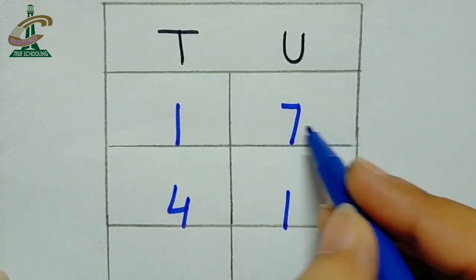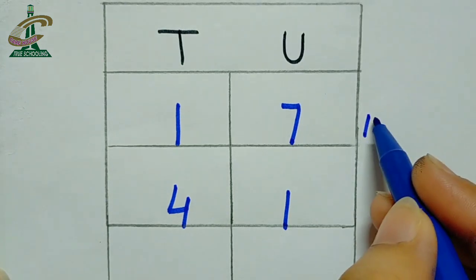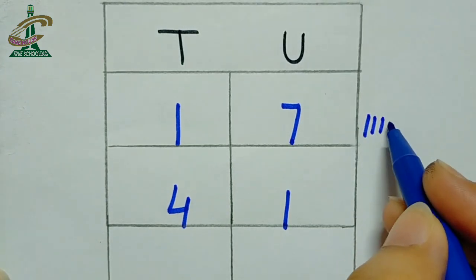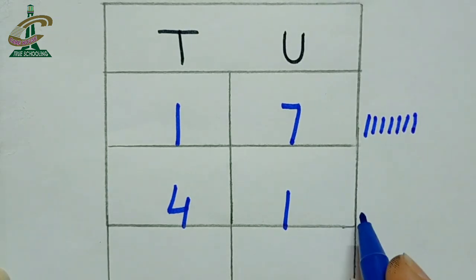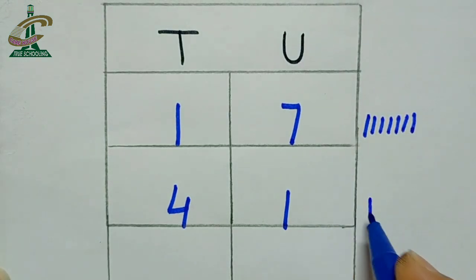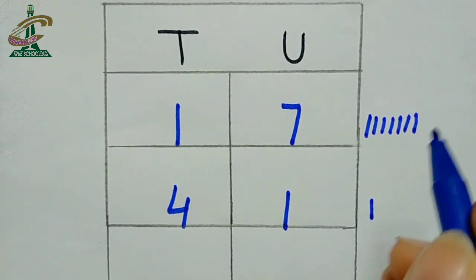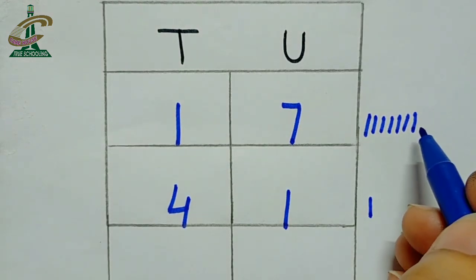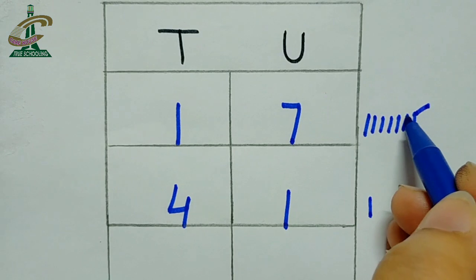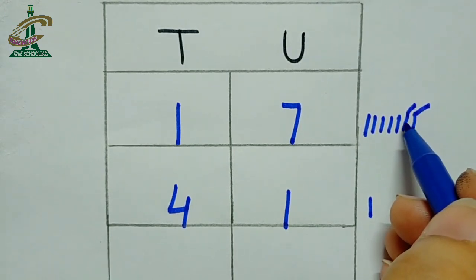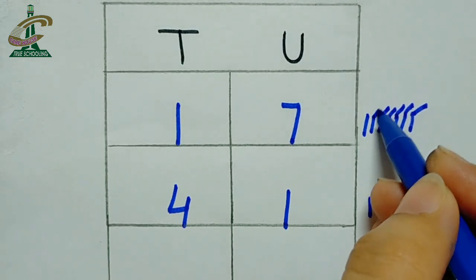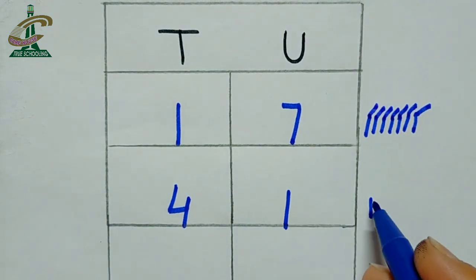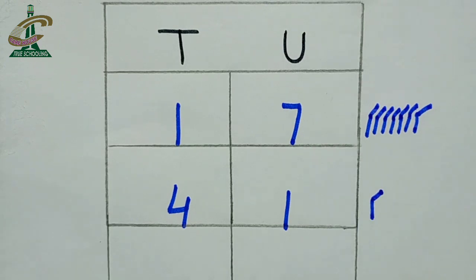How many lines you will draw? First, 7 lines. 1, 2, 3, 4, 5, 6, 7 and down side there is a number 1. How we can add and how we can collect all the numbers? Count with me. 1, 2, 3, 4, 5, 6, 7 and 8. 8. Which number we have got? 8.